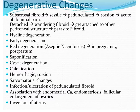A sessile fibroid can sometimes become parasitic — it gets attached to some other peritoneal structure, resulting in the development of a parasitic fibroid that is then dependent on those other structures. Hyaline degeneration is one factor, and fatty degeneration refers to the development of fatty depositions in the fibroid.